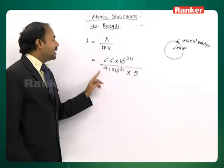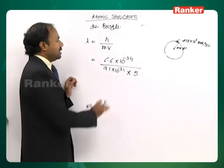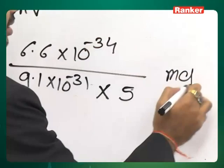On solving this we get the wavelength of the electron, moving electron here. This comes out in meters here.